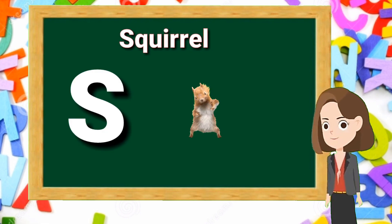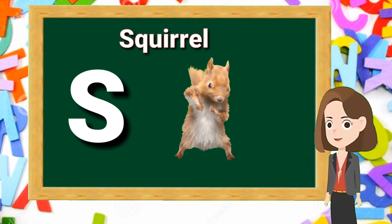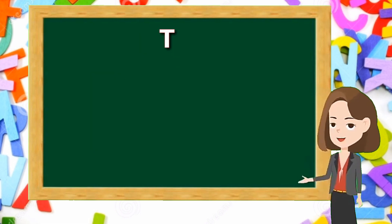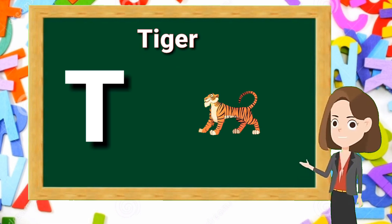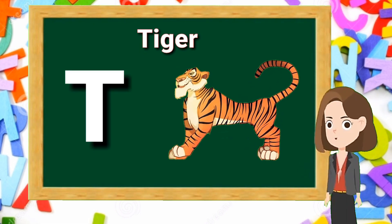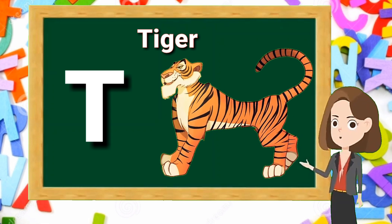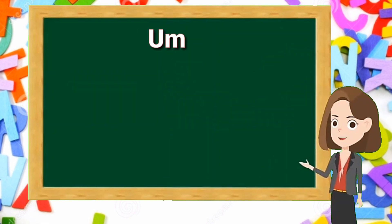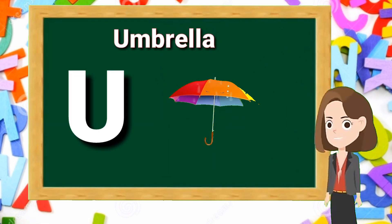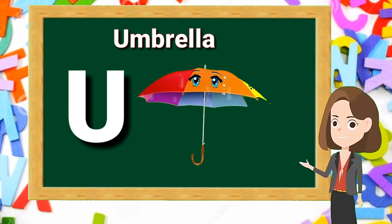S for squirrel. S, s. Squirrel. E for tiger. G, g. Tiger. U for umbrella. G, g. Umbrella.